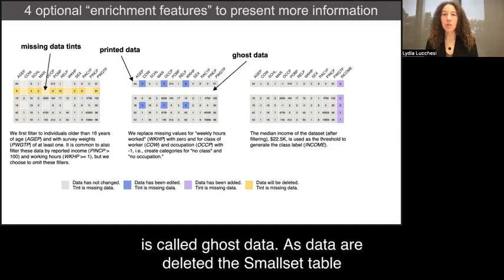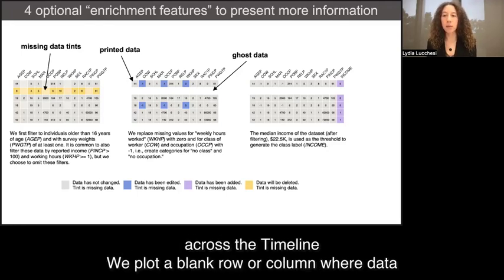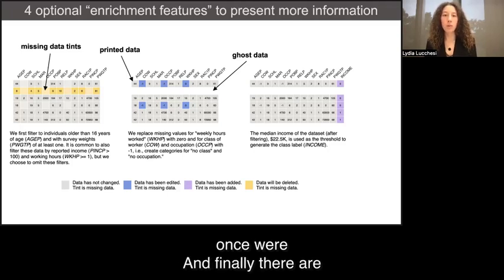The third enrichment feature is called ghost data. As data are deleted, the small set table naturally shrinks, which can make it difficult to track individual points across the timeline. We plot a blank row or column where data once were. And finally, there are resume markers.